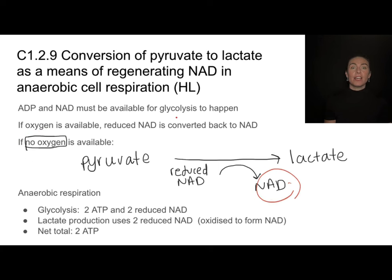In anaerobic respiration, we make two ATP and two reduced NAD molecules. If there's still no oxygen available, that lactate production uses the two reduced NAD and produces two regular NAD. We are then left with just a total of two ATP. So if we have to do anaerobic respiration, the only energy products produced are those two ATP, and then that pathway ceases.